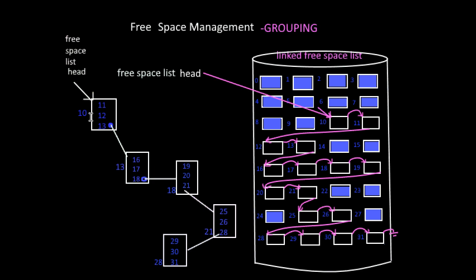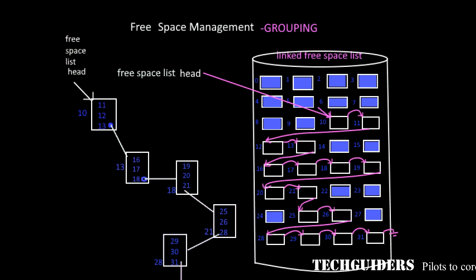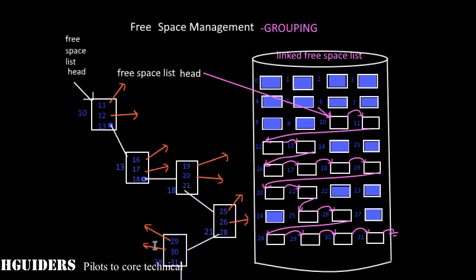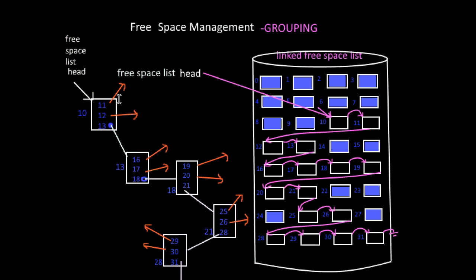Hence each block is acting as an index to the free blocks, and such index blocks are linked together. Hence we can say that this is a linked indexed implementation. The main advantage here is that with one disk block access we get the addresses of a group of free blocks.